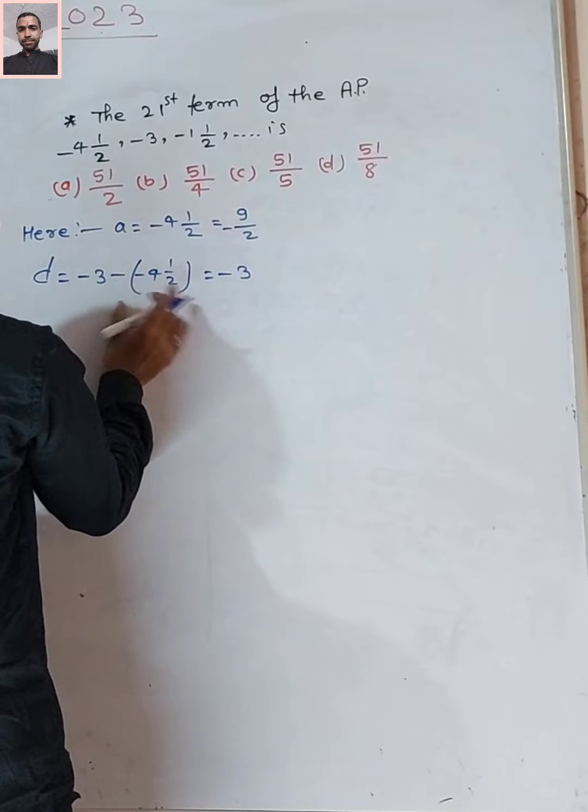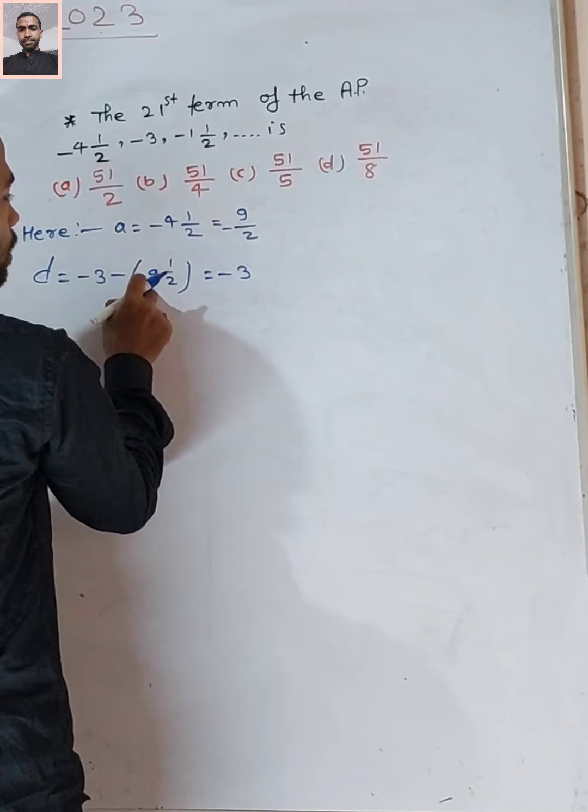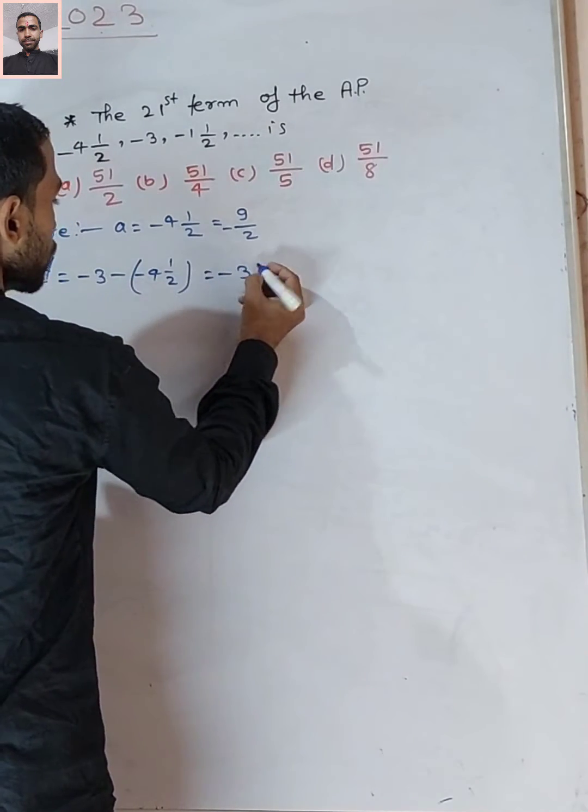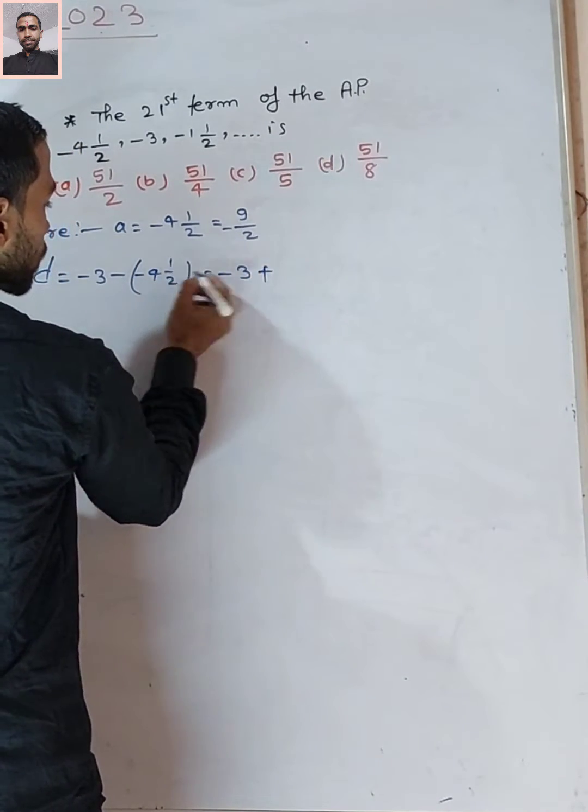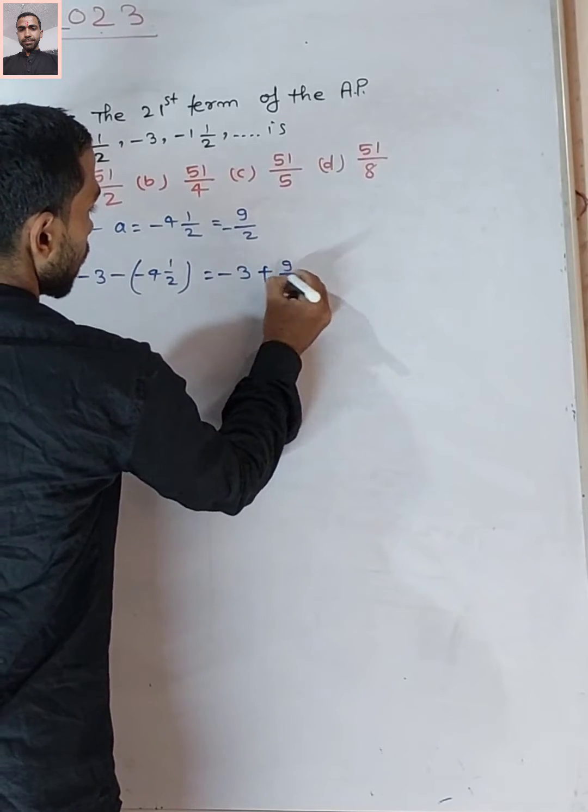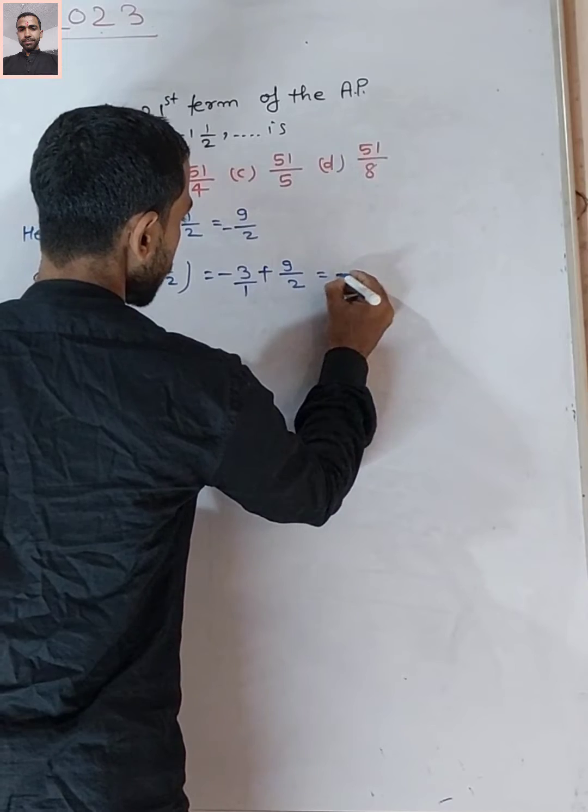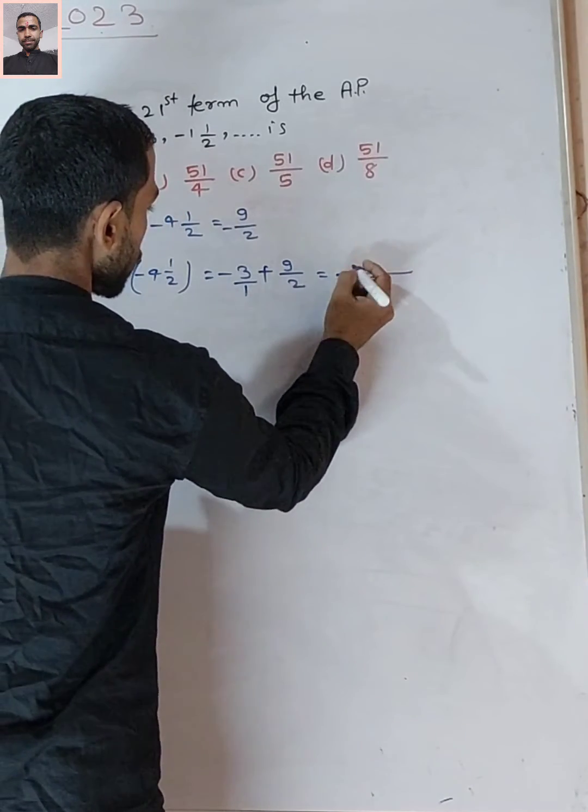When there's a minus sign before a bracket, we change the signs inside the bracket. So minus becomes plus, giving us +9/2. The LCM of 1 and 2 is 2.